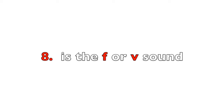Digit 8 is the F or V sound. The memory aid: with a little imagination, an 8 with a small tail looks like a cursive lowercase F. That helps you remember digit 8 is associated with the F sound. Think about the position of your mouth and teeth — F and V are basically the same sound.